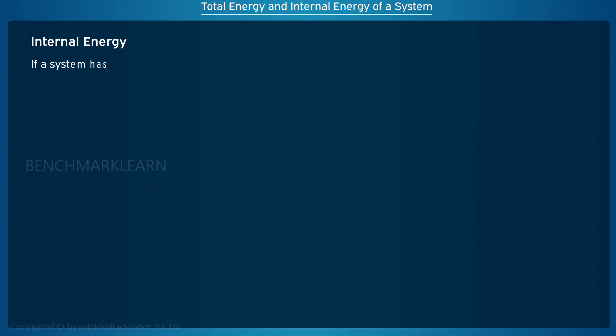For a system which has no motion and has no change in its elevation, the change in the macroscopic kinetic energy delta KE and change in macroscopic potential energy delta PE becomes zero. As a result, the total energy change delta E of the system becomes the internal energy change delta U, i.e., delta E is equal to delta U.